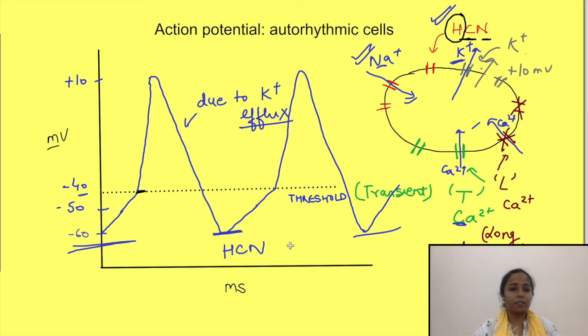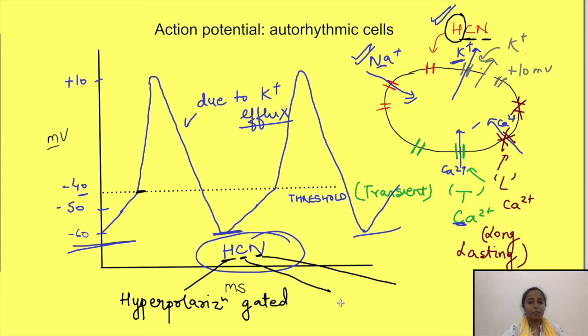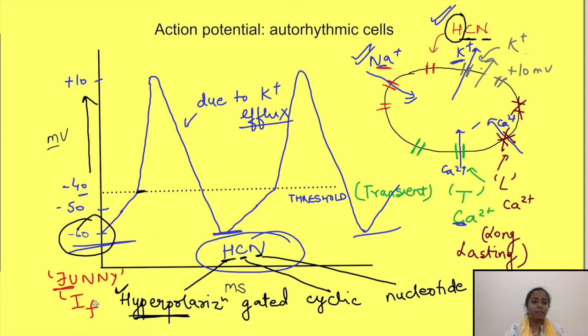I will just digress a little bit here and talk about HCN channels. See, these HCN channels which we spoke about in the beginning—these are hyperpolarization gated cyclic nucleotide channels. As the name suggests, they open due to hyperpolarization. This is a rare kind of voltage-gated channel since it opens due to hyperpolarization. Most other voltage-gated channels open when the membrane becomes less negative, i.e., depolarizes. Because of this they are termed as funny, and the current which occurs due to movement of sodium ions through them is known as funny current.